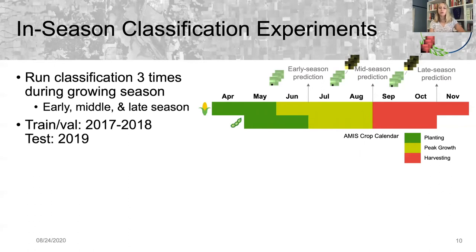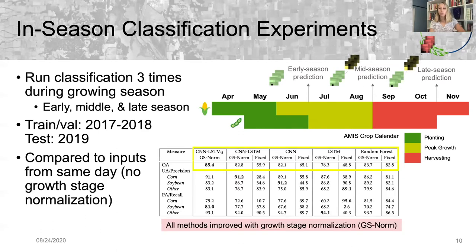To evaluate the temporal generalization of this approach, we trained the model using data from 2017 and 2018, and we tested that model using data from 2019, which was an anomalous year due to the late planting and extreme weather. We tested our method, which we call CNN-LSTM delta, as well as the CNN-LSTM without the delta input, and the CNN and LSTM branches independently, as well as a random forest. We compared these methods with growth stage normalization to how they would perform without growth stage normalization, or using the same dates for all inputs.